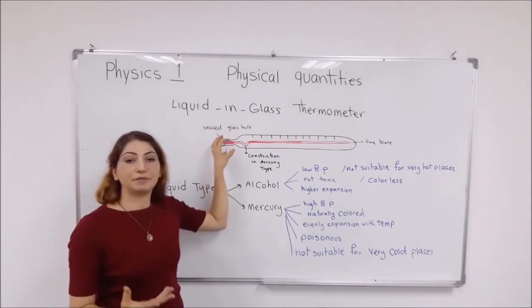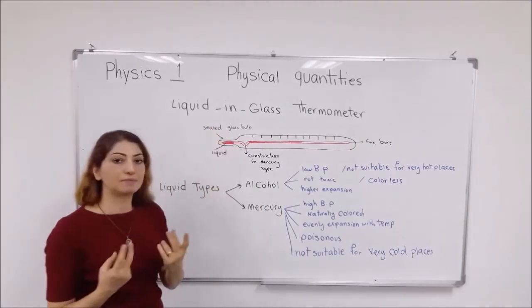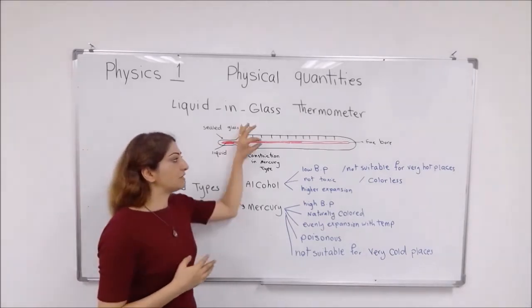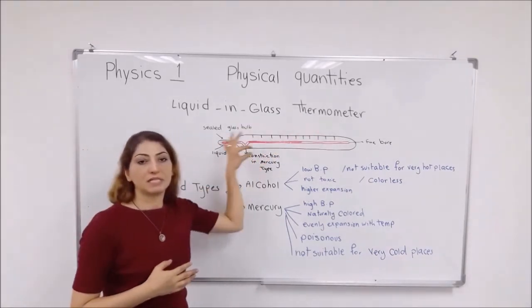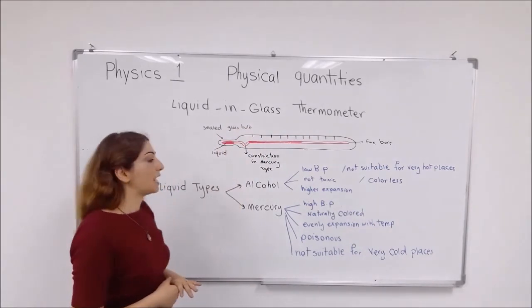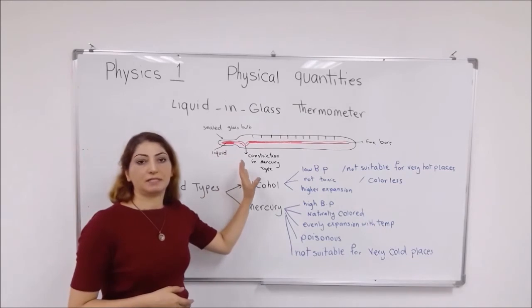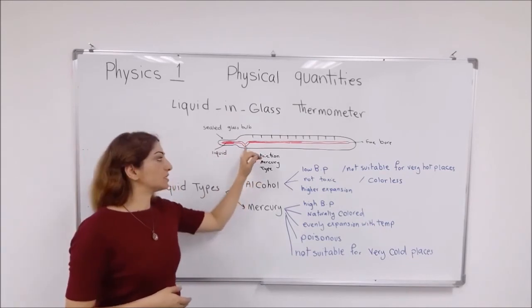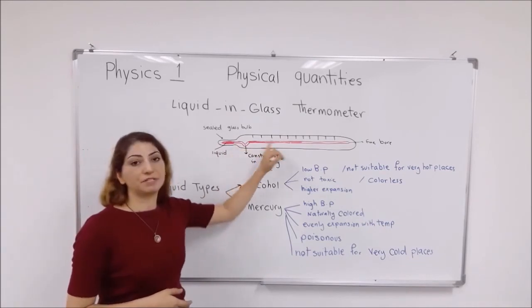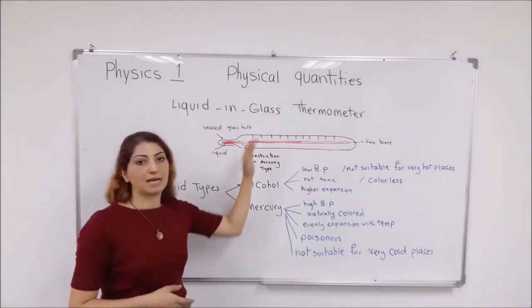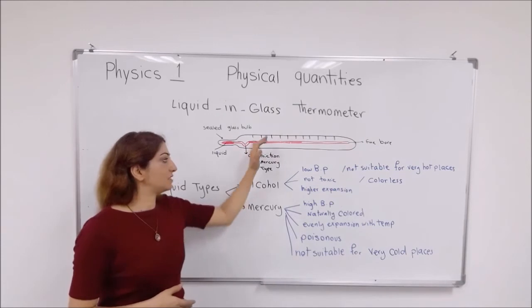The liquid can be mercury or alcohol, two types of liquids they use. It has a very fine bore which is inside the thermometer. For mercury thermometers, there is one constriction here that doesn't let the mercury go back into the bulb. For the alcohol ones, they don't have this constriction.